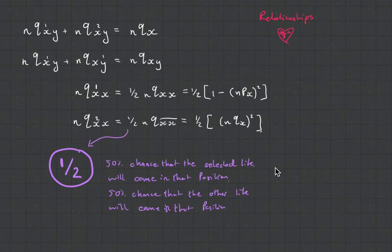And there's also another 50% chance that the other life will come into that position. So this would be a third if we had three lives, although then the mathematics would get quite tricky. But that's what that half is representing.